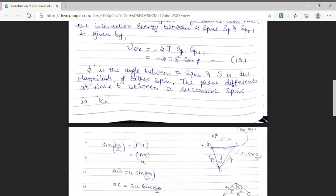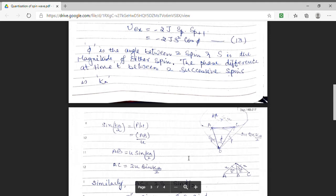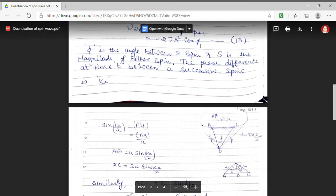Here, I have shown these two spins. This is my first spin SP. This is another neighboring spin SP plus 1. And the angle between them is phi. And the upper diagram shows the phase difference between these two spins at a particular time T. And the phase is Ka. And we know, we have expressed the magnitude of amplitude by u. From here, I am going to find the value of angle phi in terms of phase Ka.